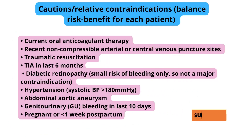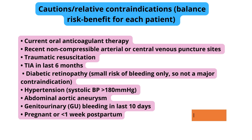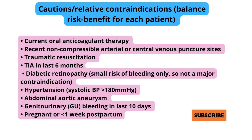Cautions and relative contraindications — balance risk-benefit for each patient: current oral anticoagulant therapy; recent non-compressible arterial or central venous puncture sites; traumatic resuscitation; TIA in the last 6 months; diabetic retinopathy (small risk of bleeding only, so not a major contraindication); hypertension with systolic BP greater than 180 mmHg; abdominal aortic aneurysm; genitourinary bleeding in the last 10 days; pregnant or less than 1 week postpartum.